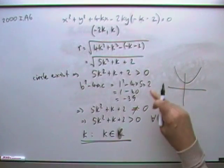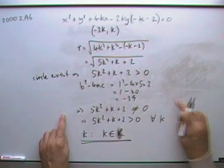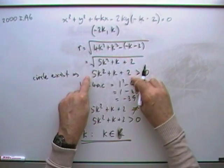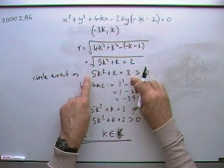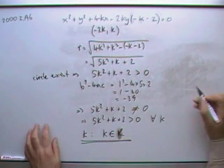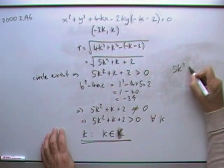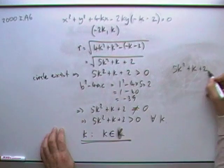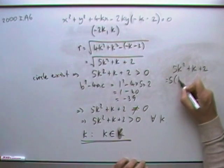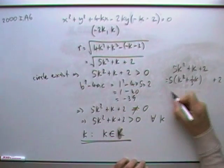The other way, when it's an absolute like that, that you could have shown it apart from the discriminant would have been by completing the square. You could have completed the square of this and shown that that was always positive. And since it's always positive, it means it's a circle for all values of k. So take out the 5, unfortunately leaving that as a fifth, leaving the 2 on its own.